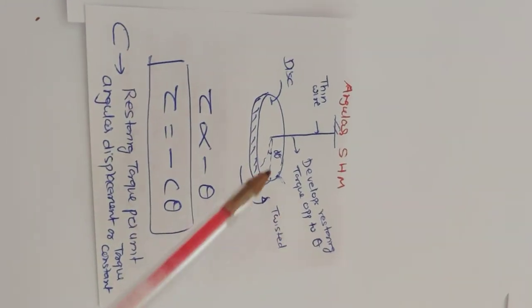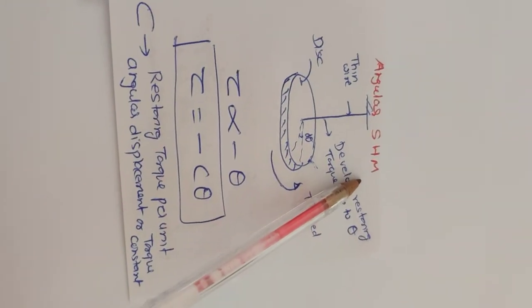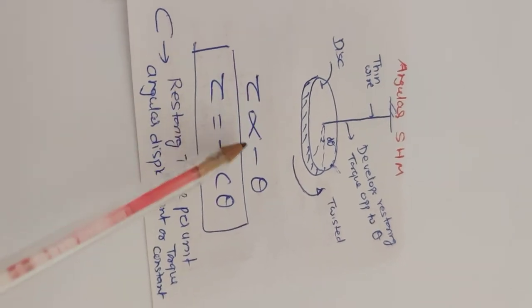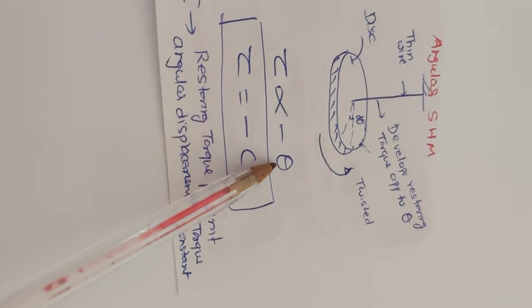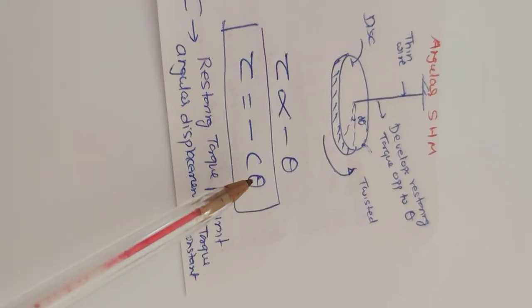This is the best practical example of angular SHM. Therefore, tau proportional to minus theta. The minus sign indicates that restoring torque and angular displacement are opposite in direction. Tau equal to minus C theta.